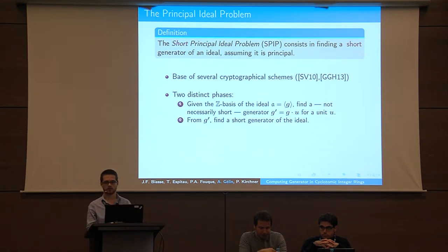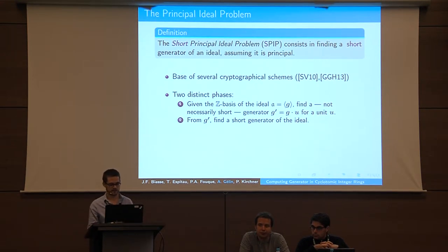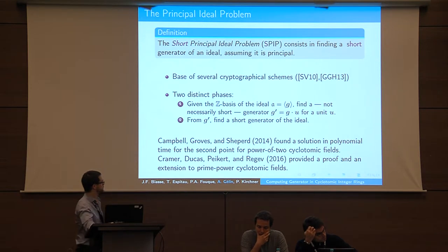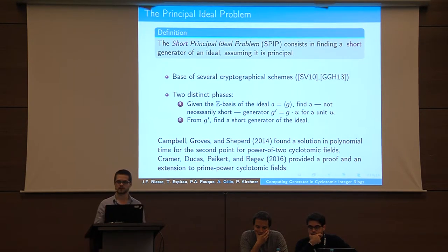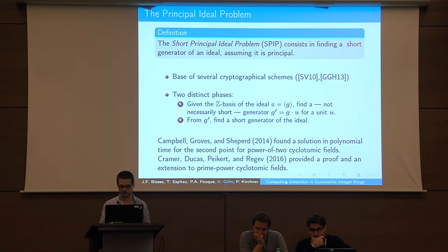The first part is: given any Z-basis of the ideal, find one generator without any condition on the generator, except that it actually generates the ideal. The second part is the reduction from any generator to a short one. This reduction part has been already well studied; Gumbel, Groves, and Shepard found a solution in polynomial time, and it was proven by Cramer, Ducas, Peikert, and Regev last year at Eurocrypt.